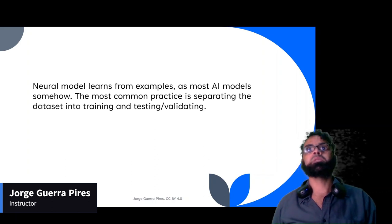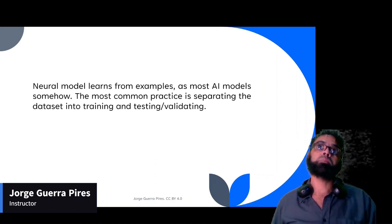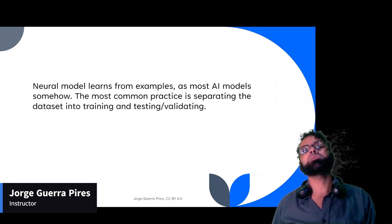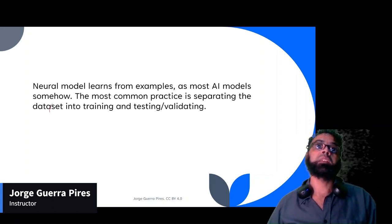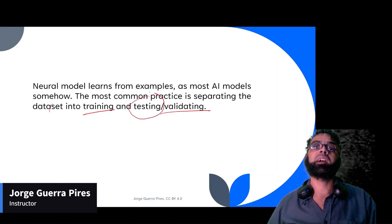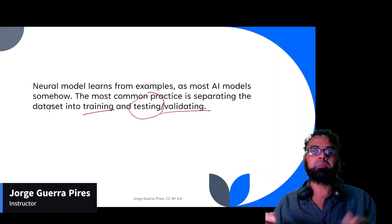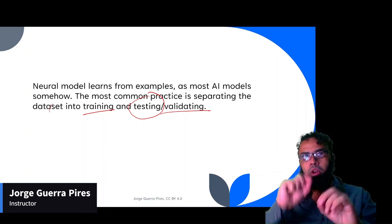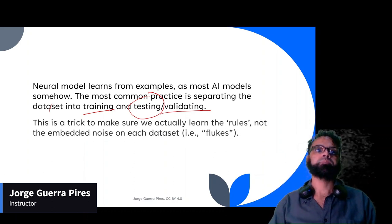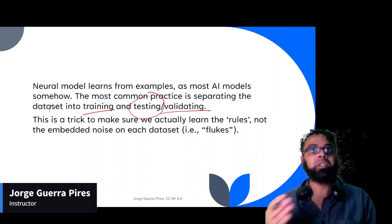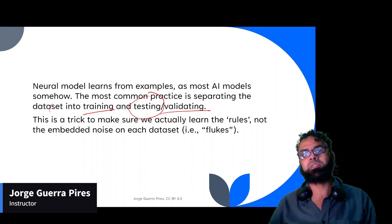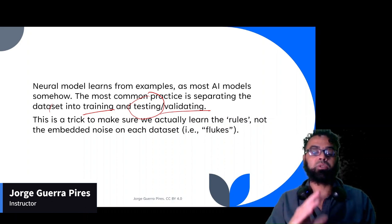As with most AI models, the common practice is to separate the dataset into training, testing, and validation. In our specific case, I'll use training and validation. There's a key trick: you want your model to learn the rule, not to memorize the data. This is the big point for artificial neural networks — you should never memorize your data. That's called overfitting.